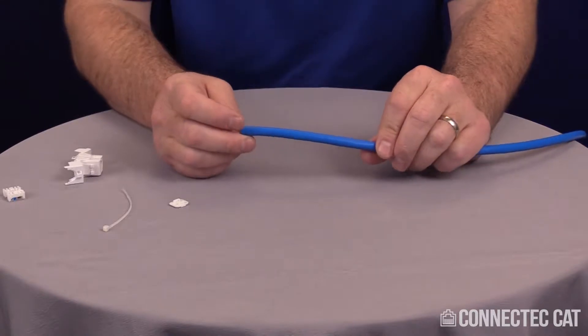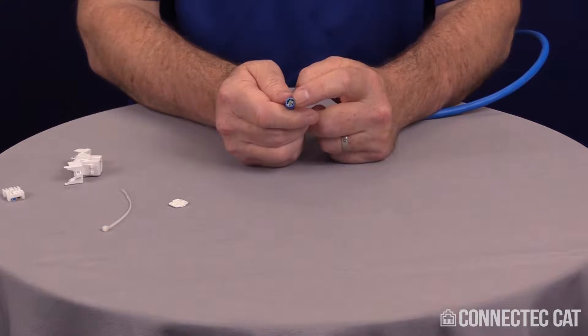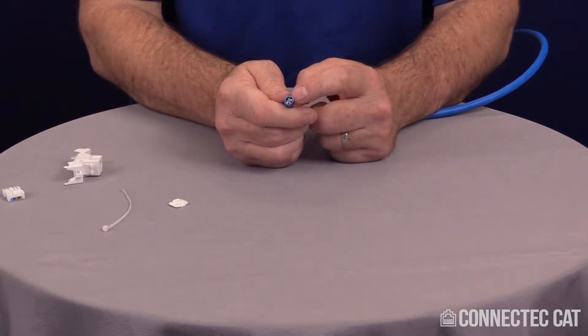Category 6A unshielded cable is very large. It's got spacers inside the jacket that actually keep the cables further apart to prevent alien crosstalk between other pairs of other cables.